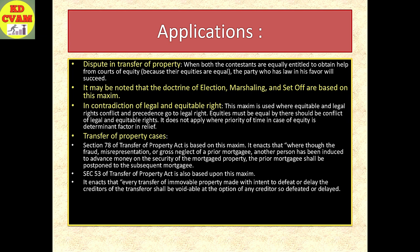In transfer of property cases, Section 78 of the Transfer of Property Act is based on this maxim. It provides that where through the fraud, misrepresentation, or gross neglect of a prior mortgagee, another person has been induced to advance money on the security of the mortgage property, the prior mortgagee shall be postponed to the subsequent mortgagee. Section 53 of the Transfer of Property Act is also based upon this maxim. It provides that every transfer of immovable property made with the intent to defeat or delay the creditors of the transferor — with malafide intention — shall be voidable at the option of any creditor so defeated or delayed.